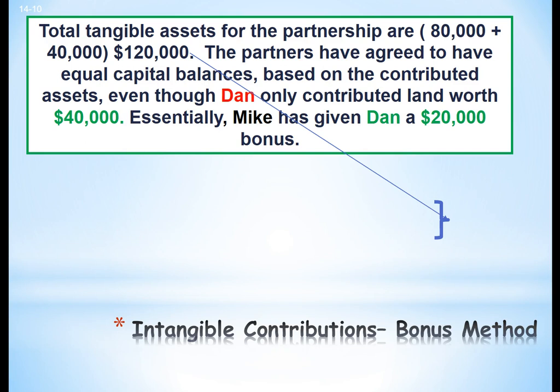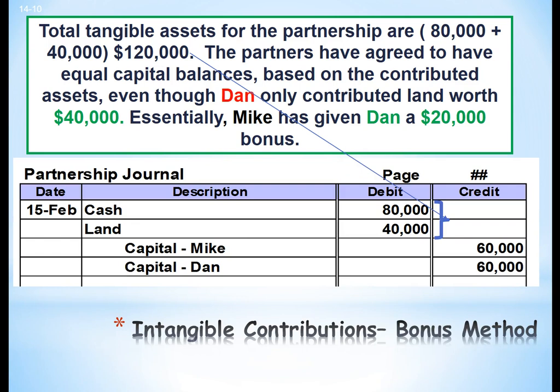Looking at the journal entries: we debit cash at $80,000 and land at $40,000, then take the total of $120,000 and divide it equally between Mike and Dan, crediting each capital account for $60,000. This is the bonus method.